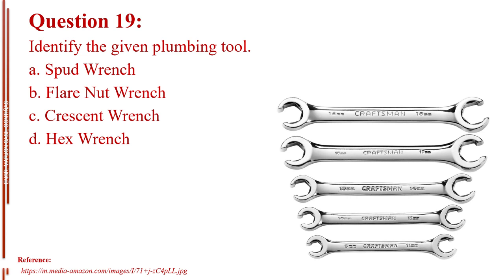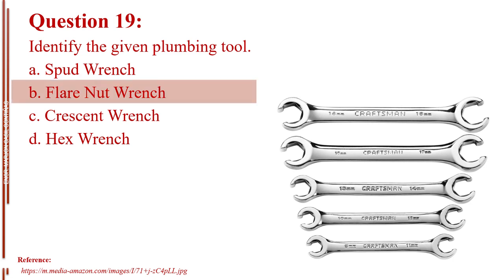Question number nineteen. Identify the given plumbing tool. Letter A, spud wrench. Letter B, flare nut wrench. Letter C, crescent wrench. Letter D, hex wrench. The answer is Letter B, flare nut wrench.